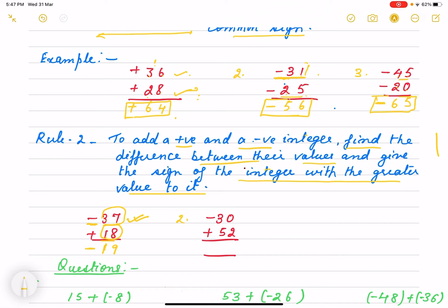Same with the second question. We take the difference. 2 minus 0 is 2, 5 minus 3 is 2. 52 is bigger. Now what is its sign? The bigger one's sign is plus, so who will win? 52 will win. What is the sign? Plus. So +22 will be the answer.